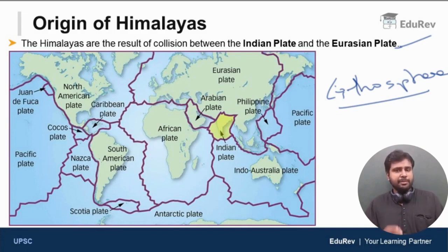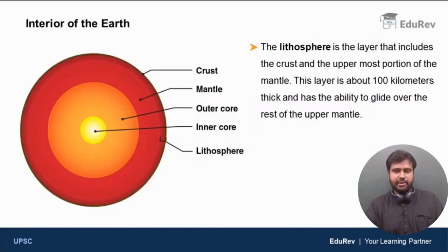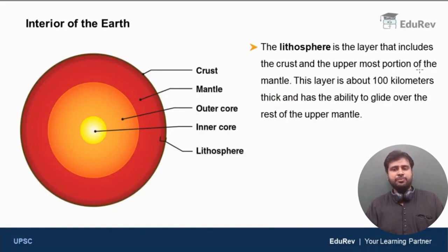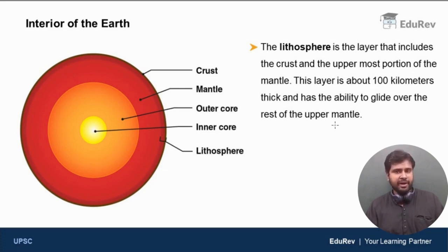Let us try to understand the meaning of lithosphere. The lithosphere is the layer that includes the crust and the uppermost portion of the mantle. This layer is about 100 kilometers thick and it has the ability to glide over the rest of the upper mantle.